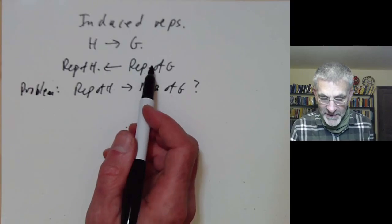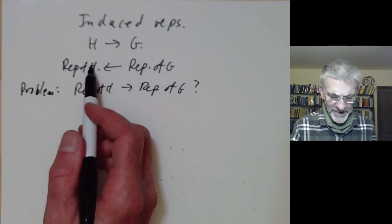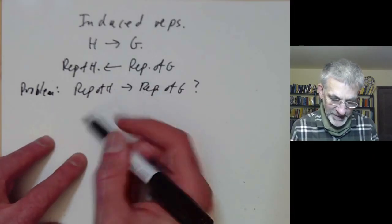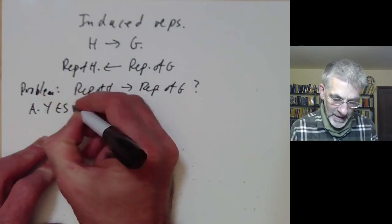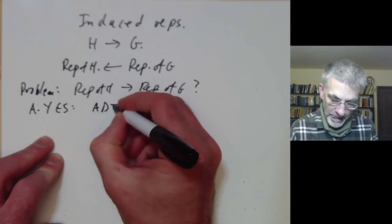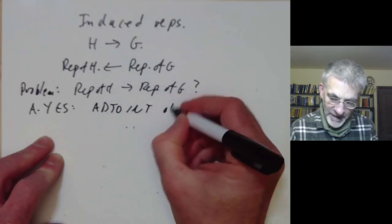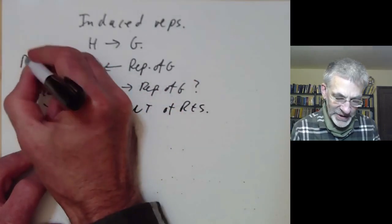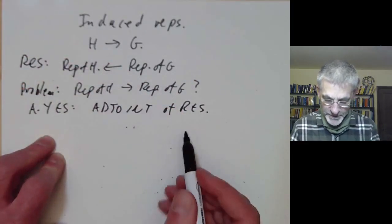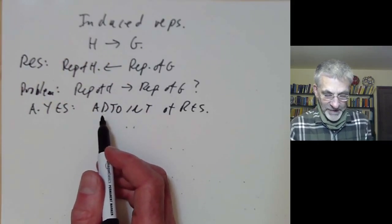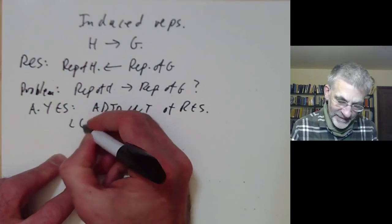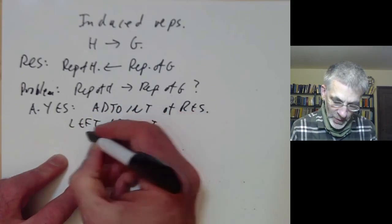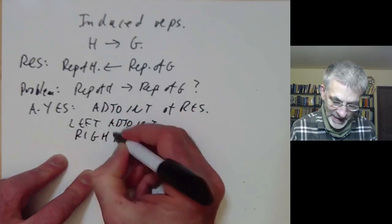Now it's not going to be an inverse of this restriction map — inverses don't really quite make sense. Instead it's something called an adjoint. So the answer is yes: we can take an adjoint map of this restriction map. We can call this map restriction. And there are actually two different sorts of adjoints: a left adjoint or a right adjoint.